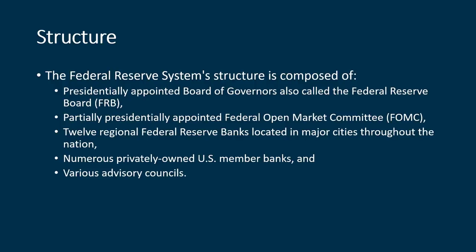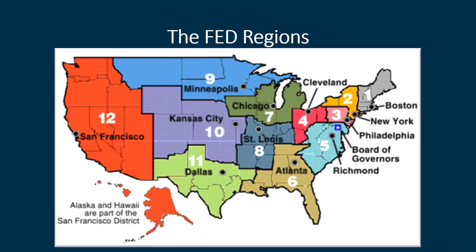Various advisory councils allow the Fed to bring in outside perspectives and expand as needed. Here is the map showing all the different regions the Fed oversees. I'm from the West Coast — the main bank is in San Francisco, with a satellite bank in Seattle. Every six weeks, the members who oversee these regional banks go to Washington, D.C. and try to decide what they're going to do about interest rates.